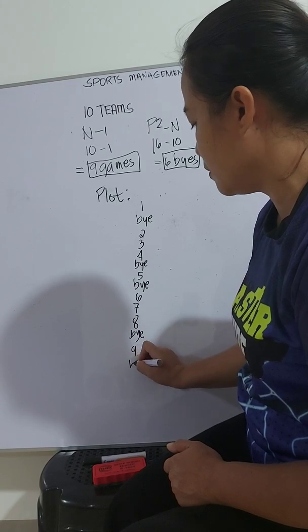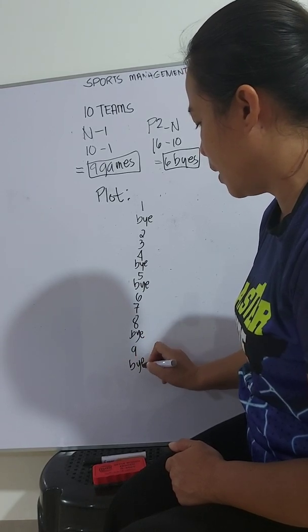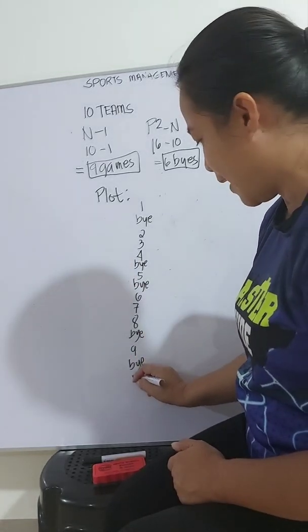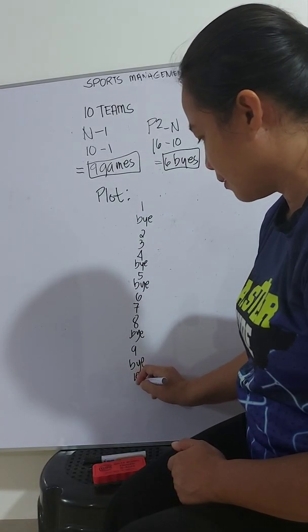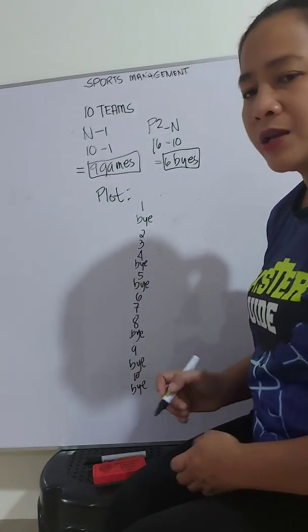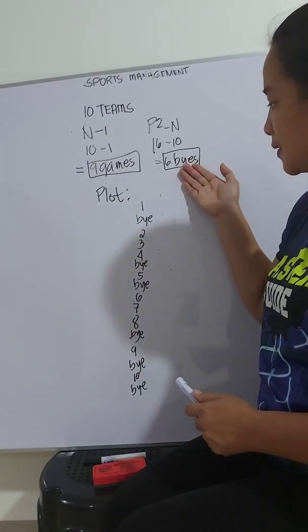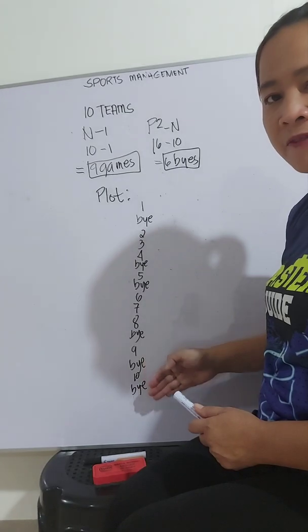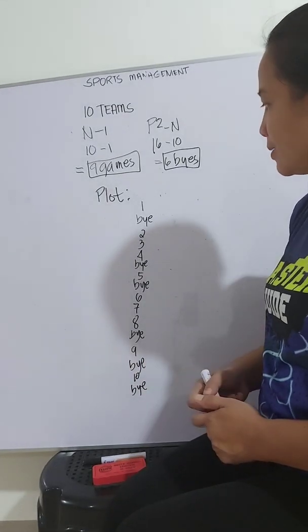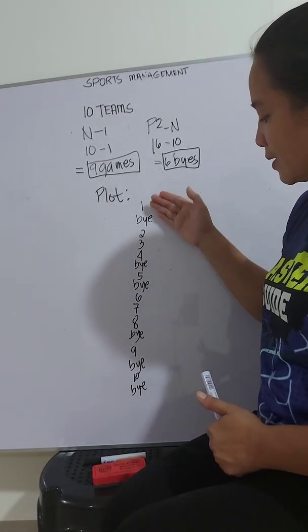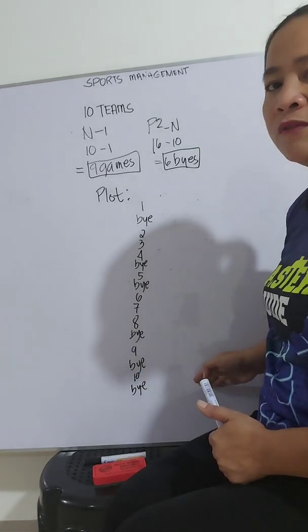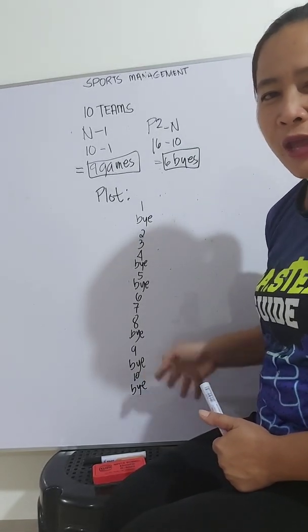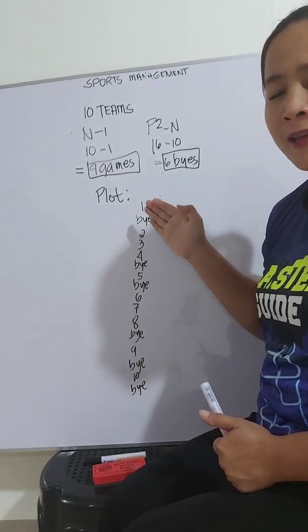Team 9, bye. Team 10, bye. As you can see, we have 6 byes: 1, 2, 3, 4, 5, 6. Basically, these teams will be moved to the next round. They are our waiting teams.